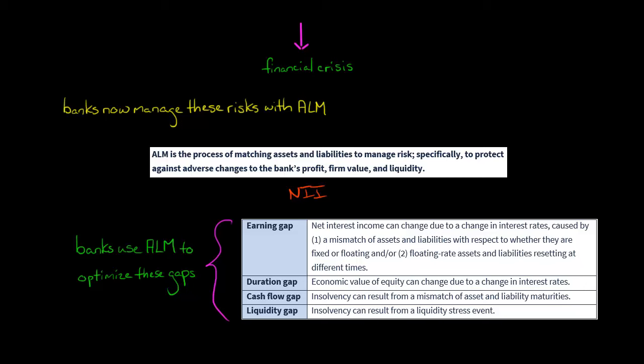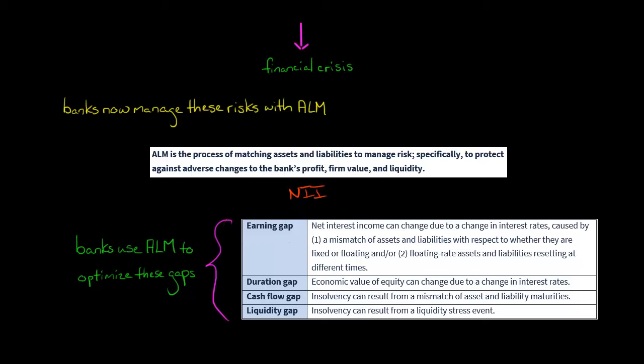The bank wants to make sure its economic value of equity is not fluctuating too wildly, and that it doesn't have a liquidity crisis where, as we saw in 2008, some banks actually went insolvent. The four gaps — the earning gap, duration gap, cash flow gap, and liquidity gap — are all topics we'll cover in the videos to come.